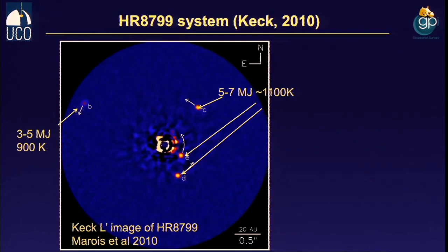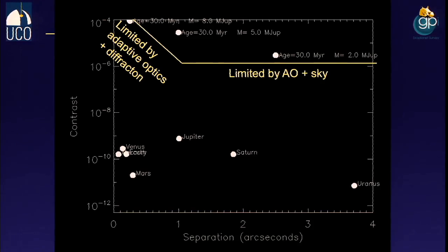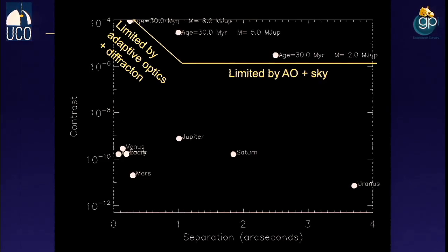Because gravitational potential energy scales as mass squared, planets even a little more massive than Jupiter will be substantially brighter. The trick is to look for them when they're young and relatively massive. These are 30 million year old, 2–5 Jupiter mass planets that would be detectable with current adaptive optics — and in fact were detected. This is HR 8799, the four-planet system that Christian Marois and I discovered in 2008–2010. Every dot is an actual planet, with the star partially blocked by a coronagraph; they're ~1000 Kelvin objects with 3–5 Jupiter masses.